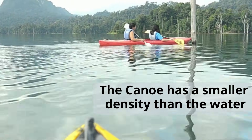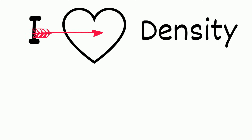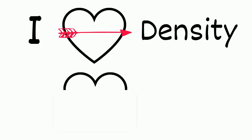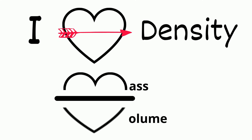An easy way to remember the formula for density is to use 'I love density.' I know, a little cheesy, but if you shoot Cupid's arrow through the heart, it creates an M and a V. So you have mass divided by volume equals density.